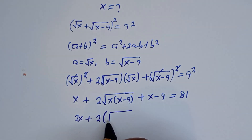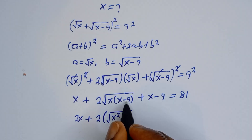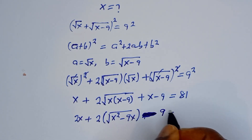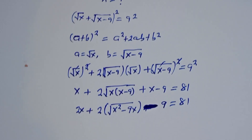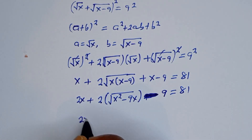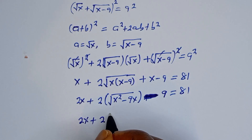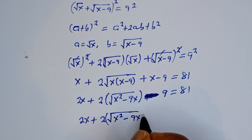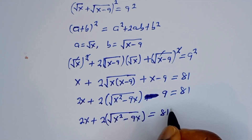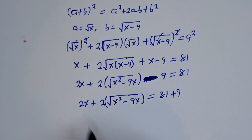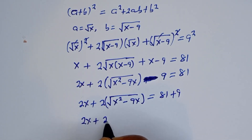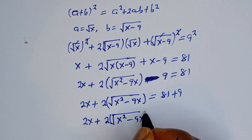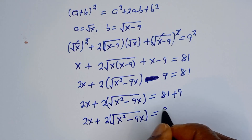Then square root of s times s minus 9 gives s squared minus 9s. So we have 2s plus 2 times square root of s squared minus 9s is equal to 81 plus 9, which is 90.